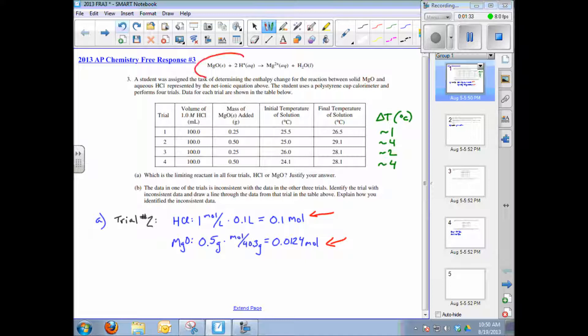I get roughly 0.01 moles of magnesium oxide. Which one's limiting? Notice the stoichiometry of the reaction tells me I've got to have twice as much hydrogen ion as magnesium oxide. Look at my mole ratio: I've got much more than twice as much hydrogen ion than magnesium oxide, so HCl is in excess and magnesium oxide is limiting.